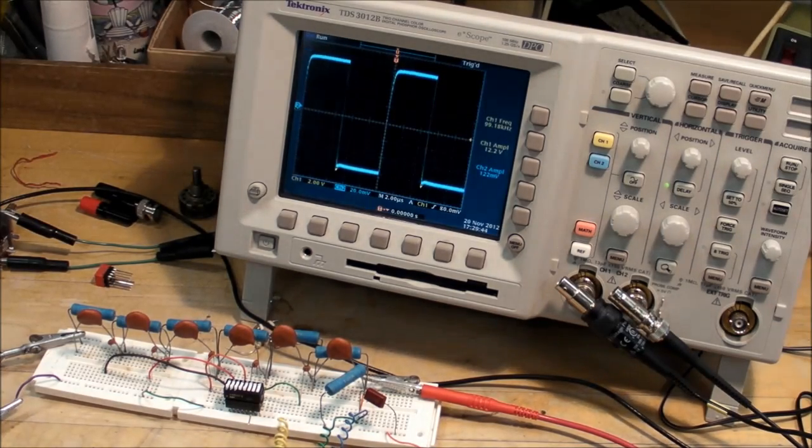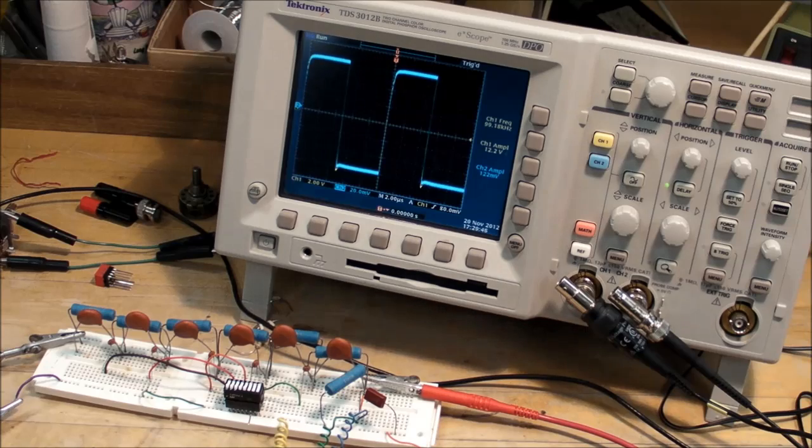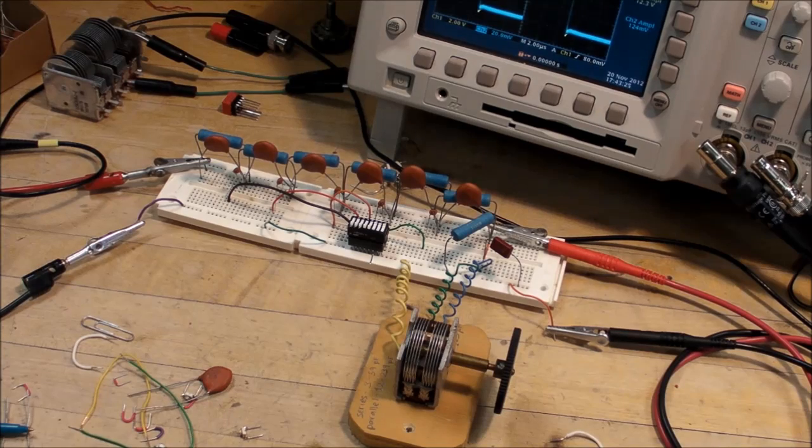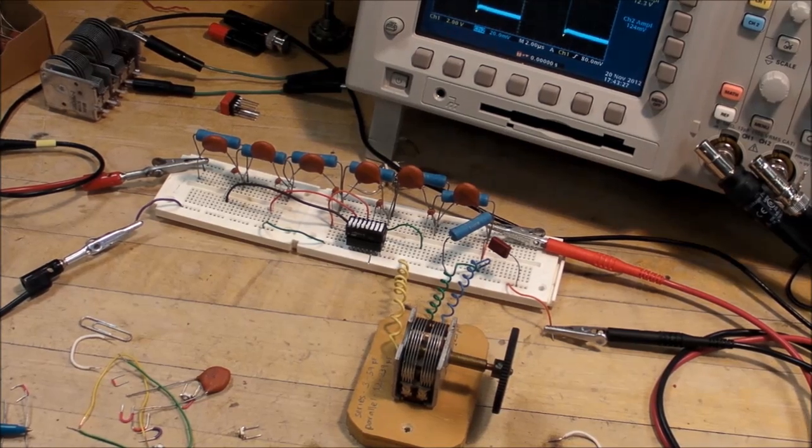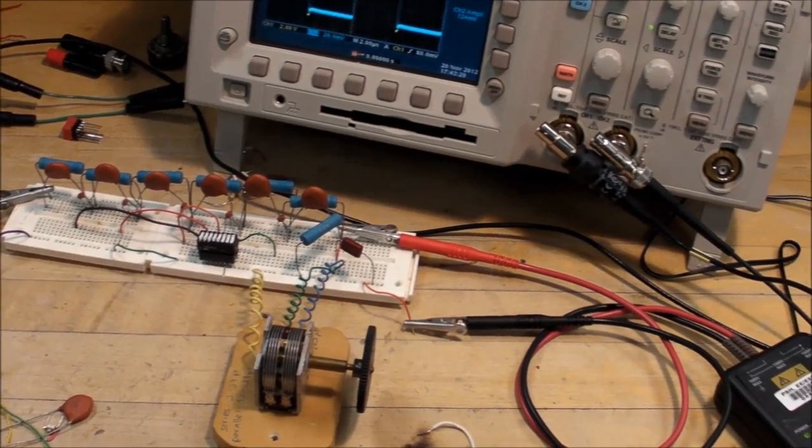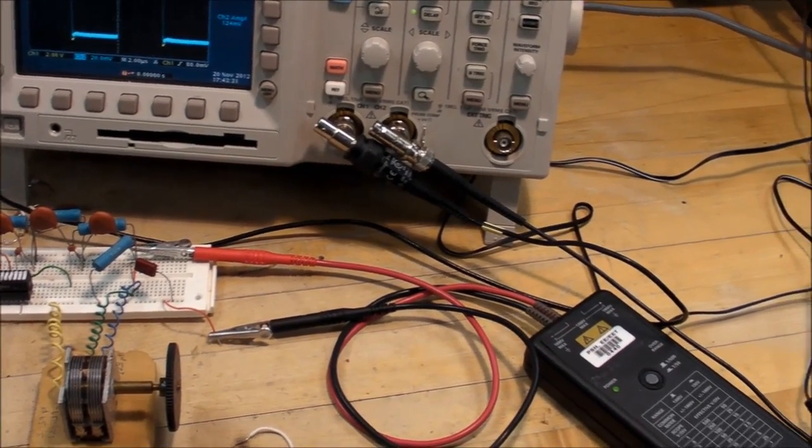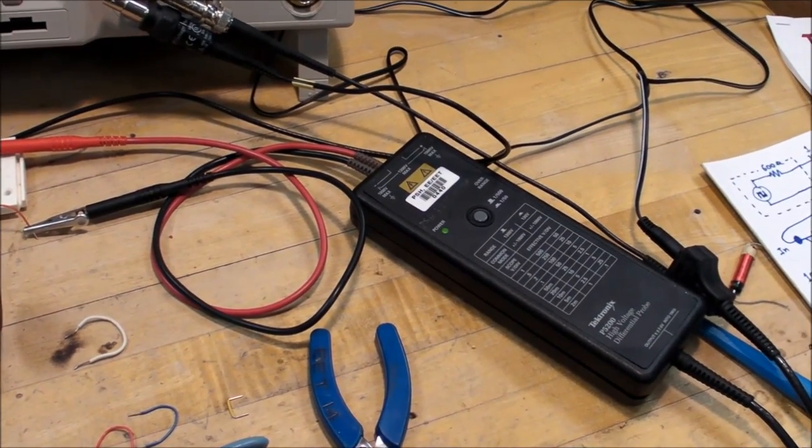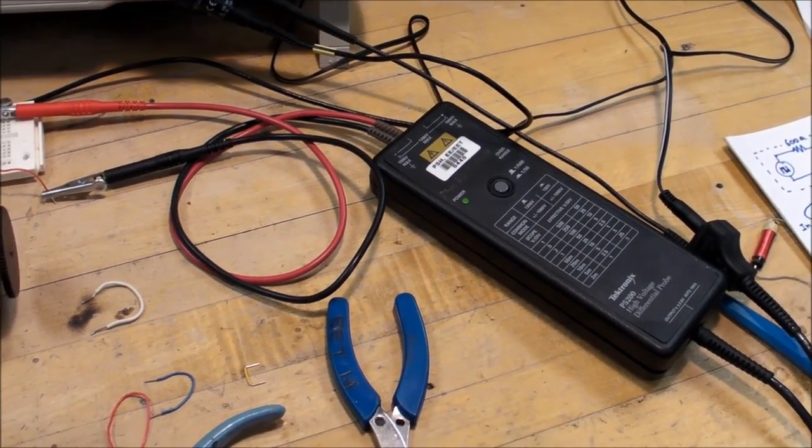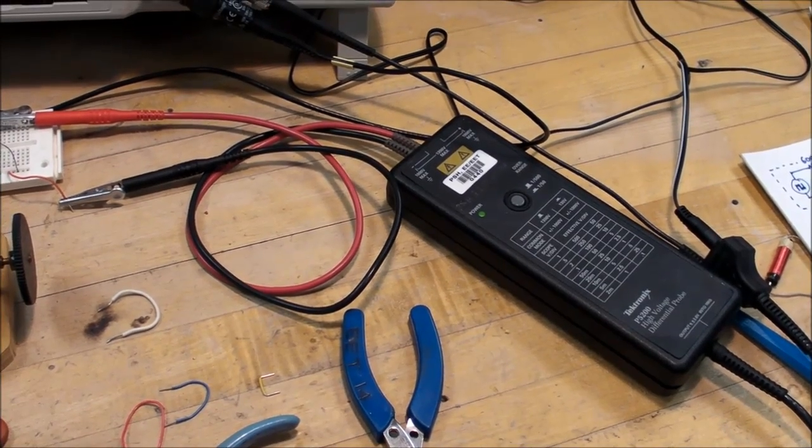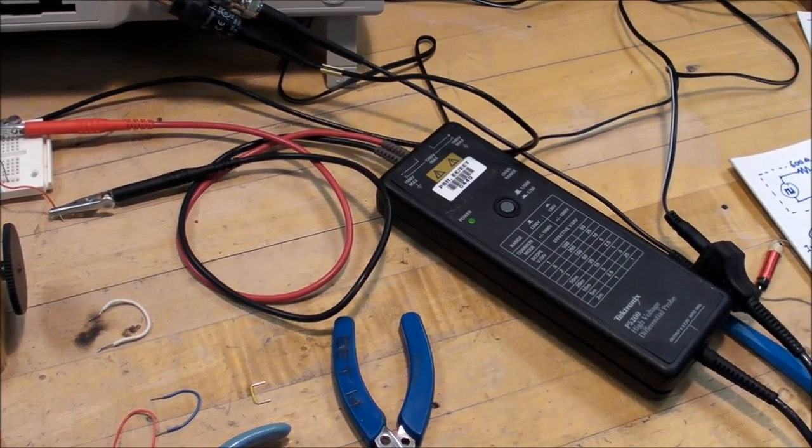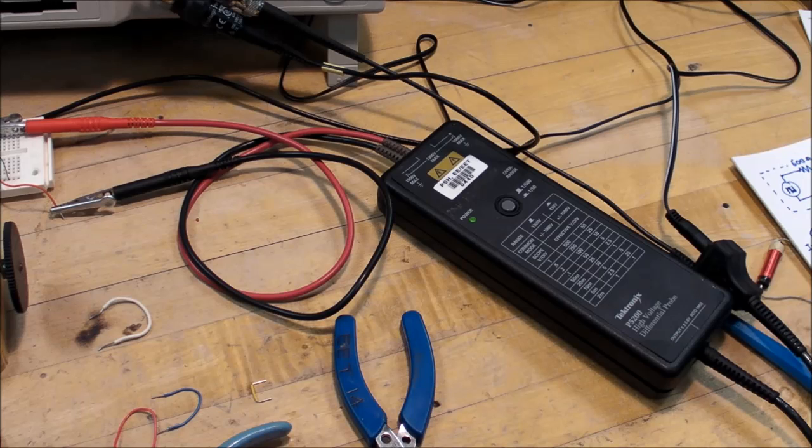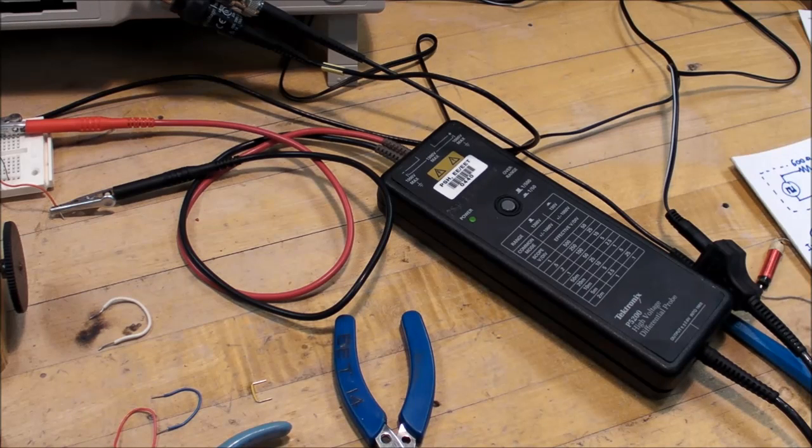My problem is that I want to make a high voltage differential probe to look at various voltages on the primary circuit of my Tesla coil. That's many kilovolts, around 10 to 20 kilovolts is what I would like to measure, and preferably I would like to use a differential probe as well.